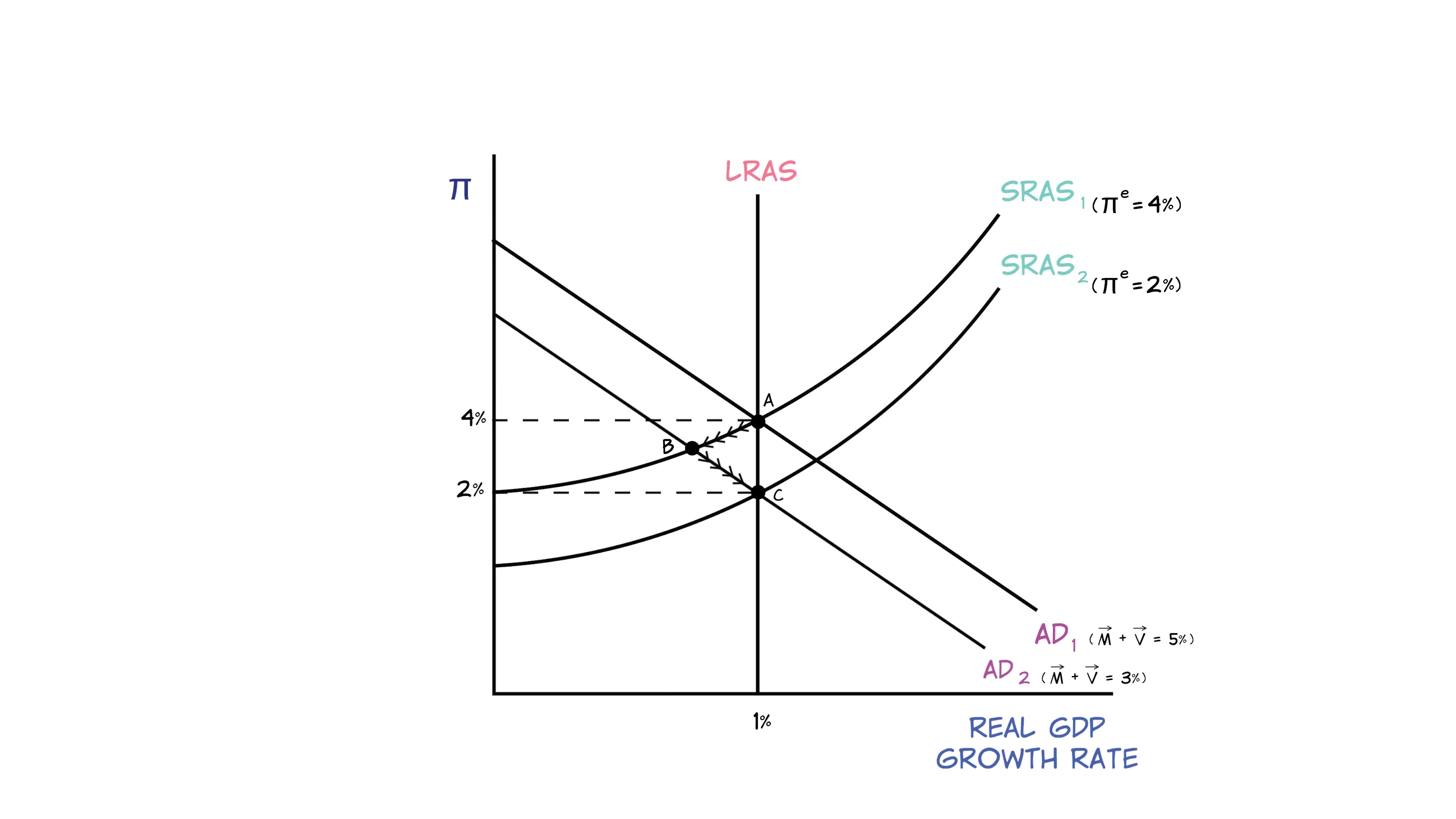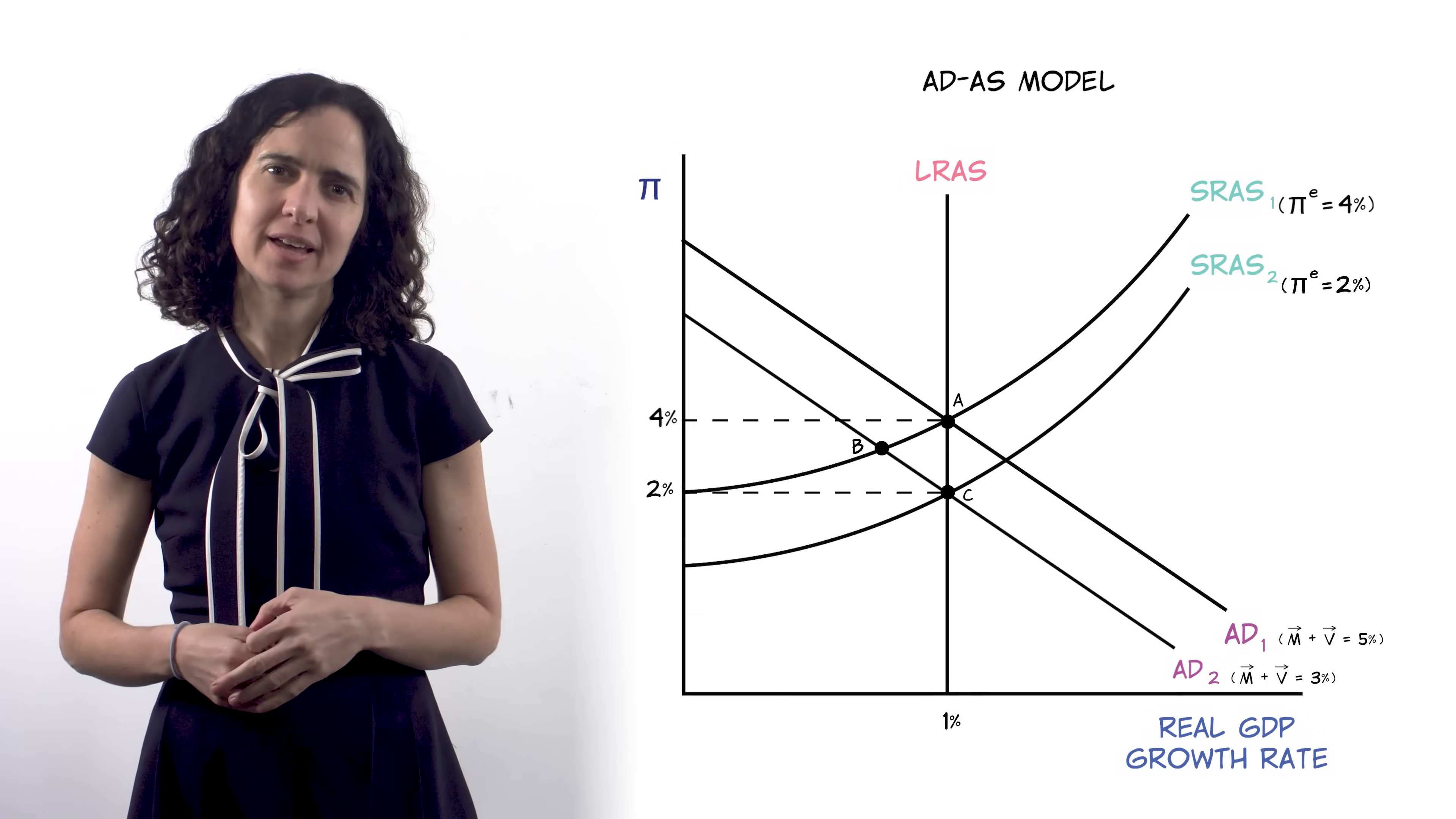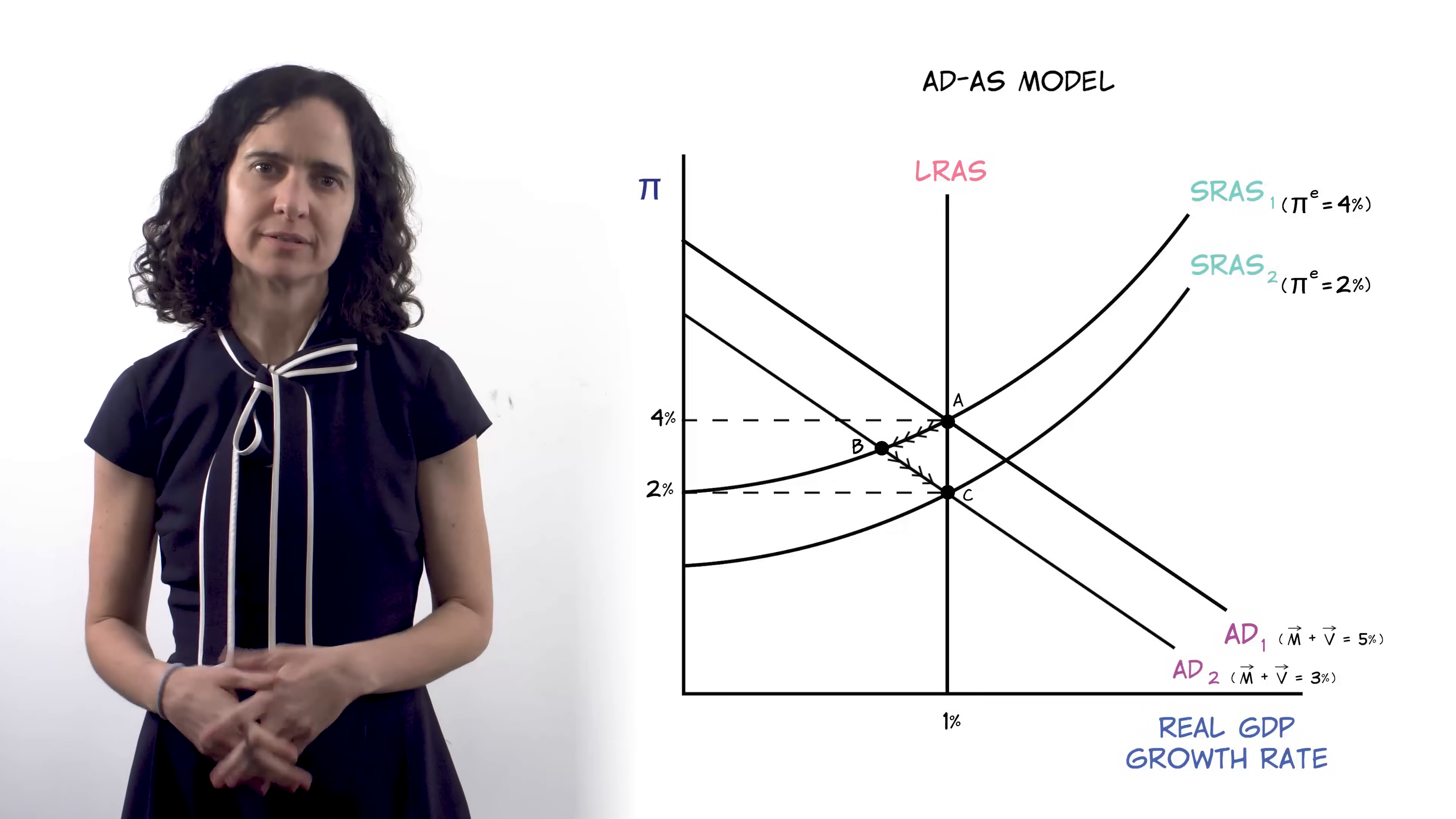Now, when we finally do return to our long run equilibrium at point C, everyone will now expect that newer, lower rate of inflation as denoted by the pi equals 2%, which means workers and firms now expect an inflation rate of 2% and make their decisions based on that expectation rather than the previous expected inflation rate of 4%. So we can also say that a short run recession occurs because at point A, people are planning and making decisions expecting that inflation would be 4%. And when that expectation turns out to be false, it takes time to adjust those plans, decisions, and expectations to the new inflation rate of 2%.